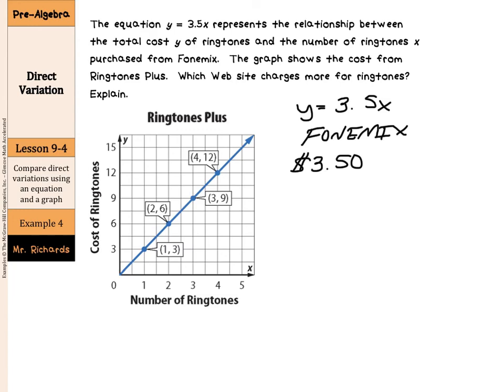Now, for ringtones plus, we need to do a little bit more work. We actually need to calculate these. And so, we have 1, 3. Well, that change in Y, change in X is just $3 per. Or even if we did the 6 over 2, that would still be $3 per. 9 over 3 is still $3 per. And that was for our ringtones plus.